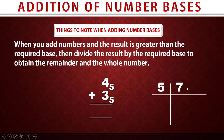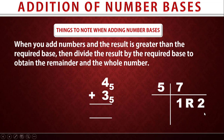Five can go into seven one time. Five times one is five, so seven minus five gives a remainder of two. So instead of writing seven, we write the remainder two, and we take the whole number one to the next addition stage. If there is no next addition stage, we just write the one as the next digit.